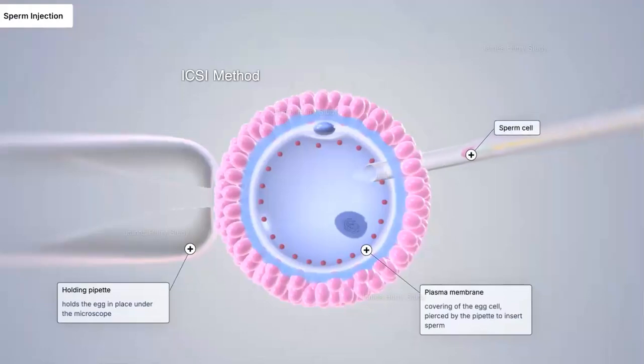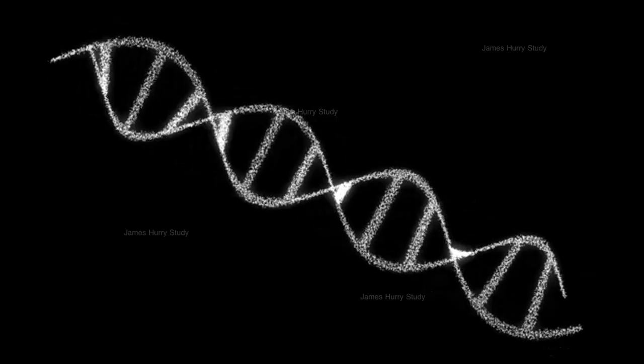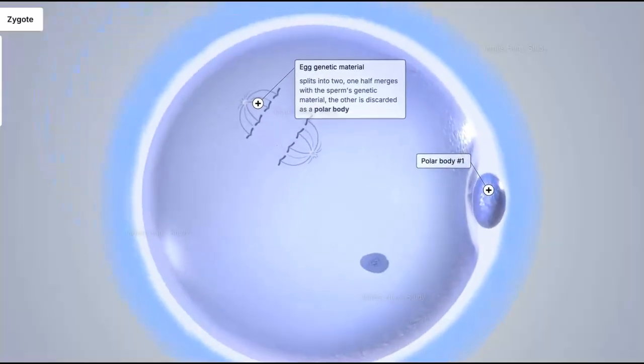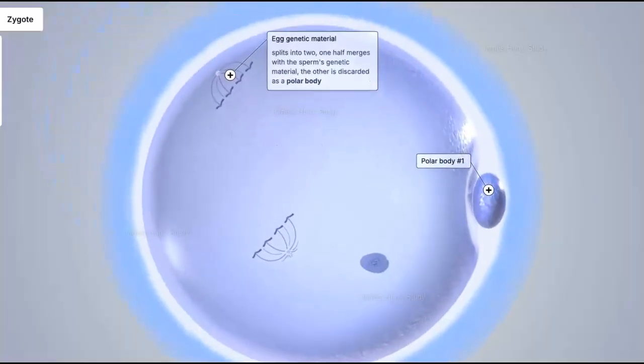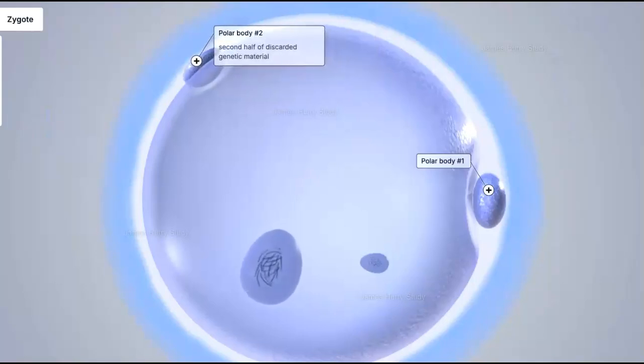Now the sperm cell is placed inside the egg cytoplasm, and the sperm head starts to decondense, with its DNA uncoiling and forming a pronucleus. The egg completes its final maturation. The genetic materials of the sperm and egg form pronuclei separately. The egg and sperm pronuclei move towards each other, combining naturally and forming a zygote. Now the fertilization process is completed, and the zygote, which is a single cell with a complete set of DNA, is formed.